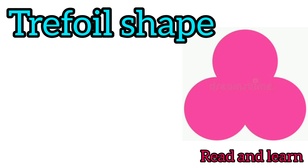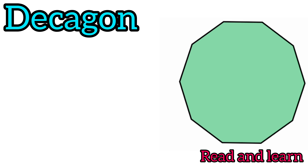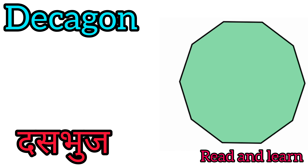Trifold shape — trifold shape means Tehra Akar. Decagon — decagon means Das Bhuj.